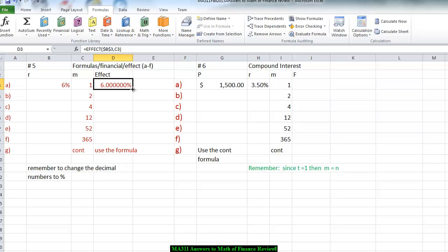Now you want to copy this particular formula. All you're going to do is you're going to scroll down, and therefore that will give us the interest rate for annually, twice a year, quarterly, monthly, weekly, and daily.